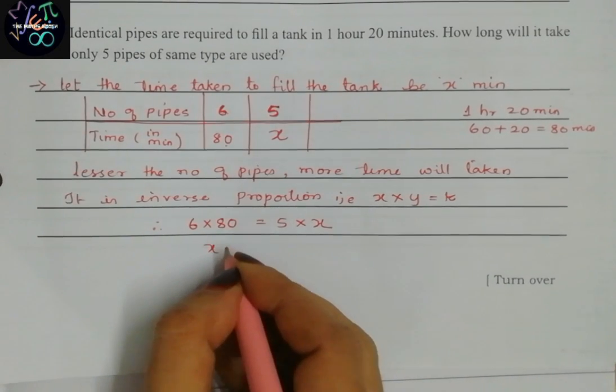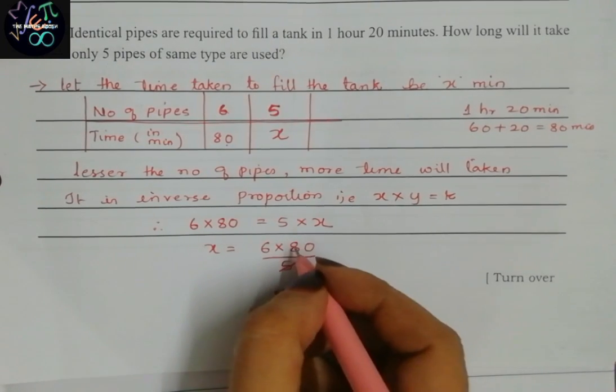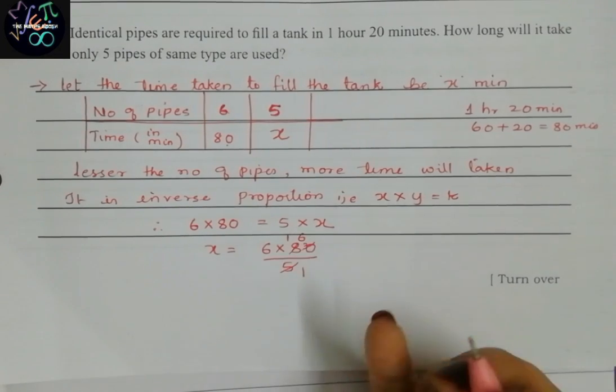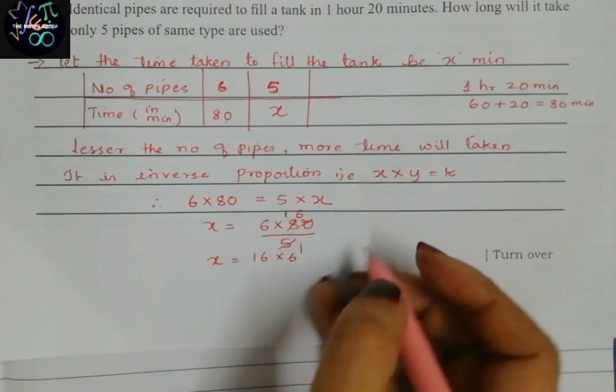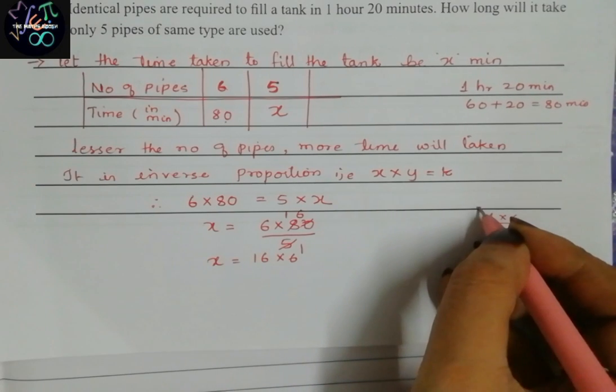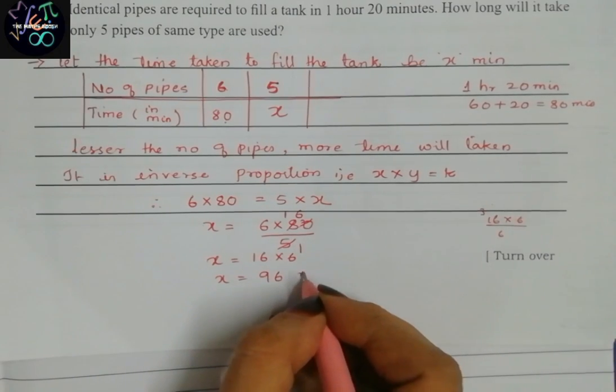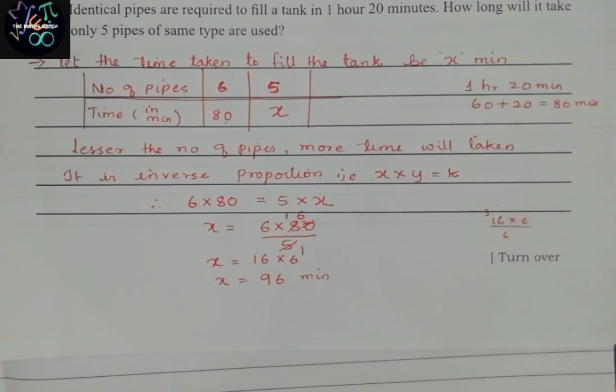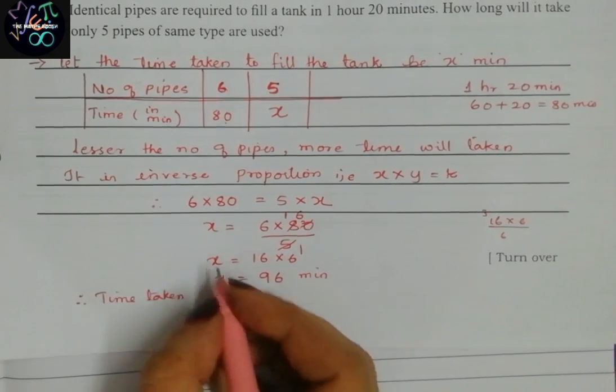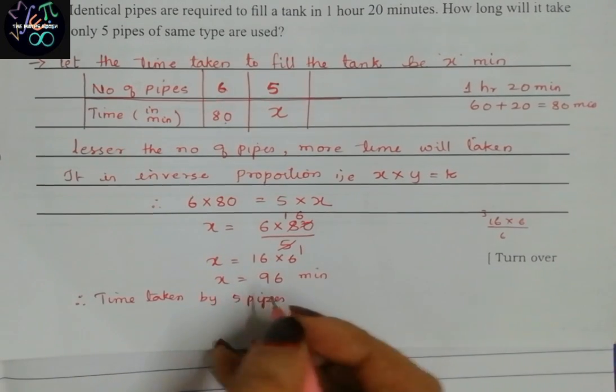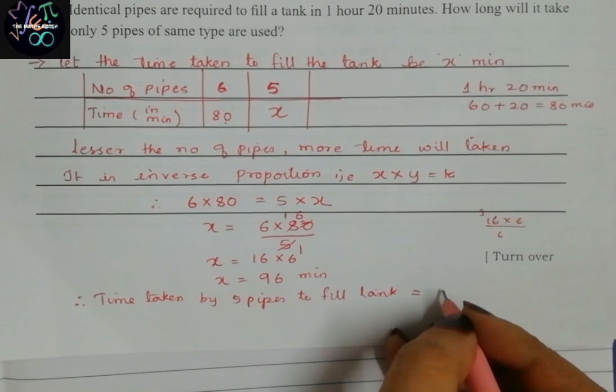Therefore, six into eighty is equal to five into x. So we want the x value. x equals six into eighty divided by five. Five goes into thirty once, leaving five. Six times thirty is... so x equals 16 into 6. If we multiply 16 into 6, we get 96. x equals 96 minutes.